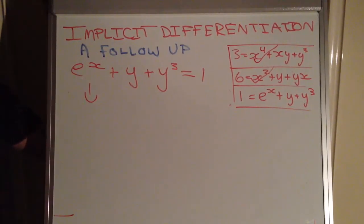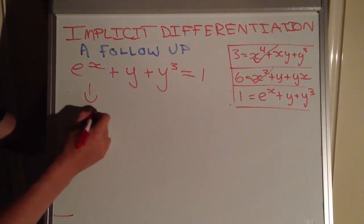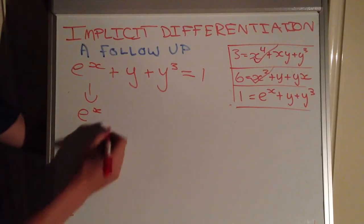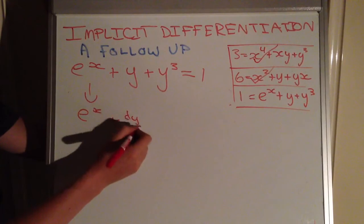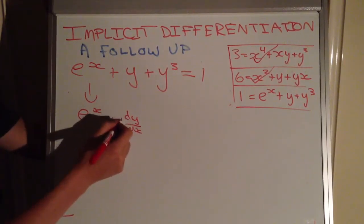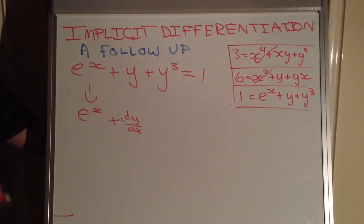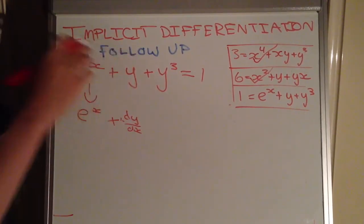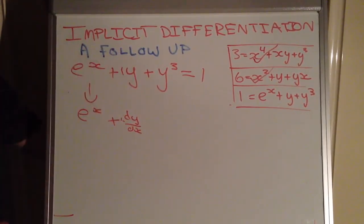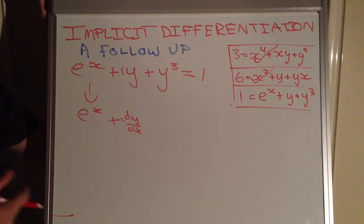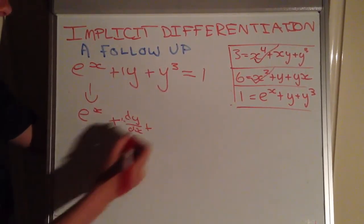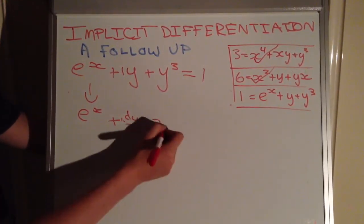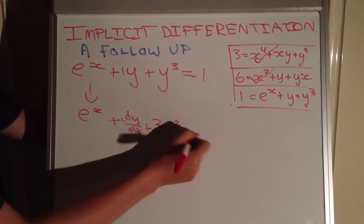So we differentiate e to the x and we get e to the x, because e to the x is its own derivative. Funny story. Okay, and then we differentiate the y term there, and we know y prime is going to be dy over dx. But it's going to be 1 times dy over dx. Think about it. We have y prime. It's one lot of y, technically. So we're going 1 multiplied by dy over dx because we're giving respect to x. And then we differentiate this last term. So we bring the 3 out the front, and then we have y squared because we subtract 1 from the exponent, and the derivative of a constant is 0.